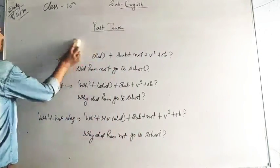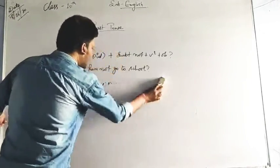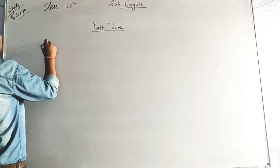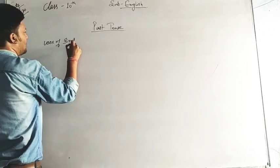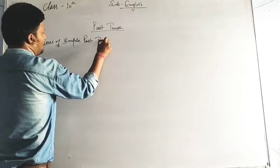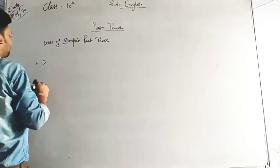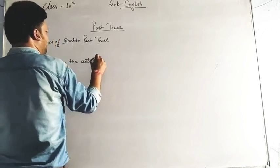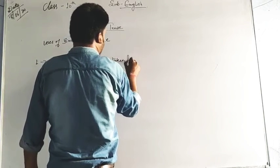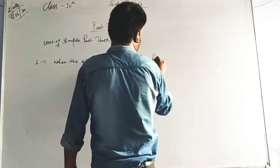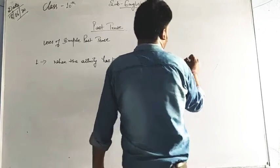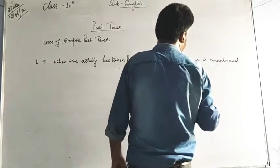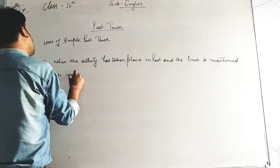Apart from the formulas, let's talk about the uses. Uses are very important, as I tell you in every class. Uses of simple past tense — the very first one is when the activity has taken place in the past and the time is mentioned or implied.